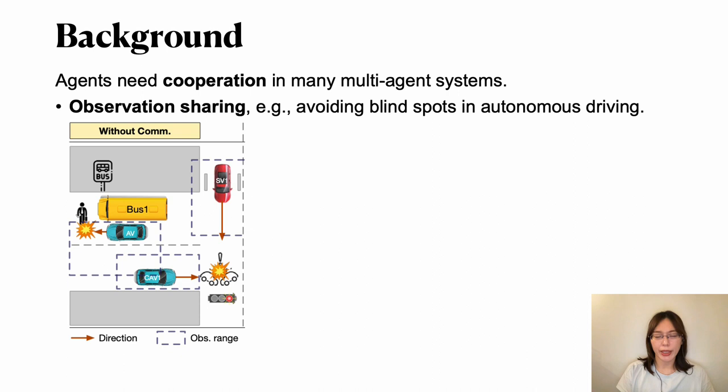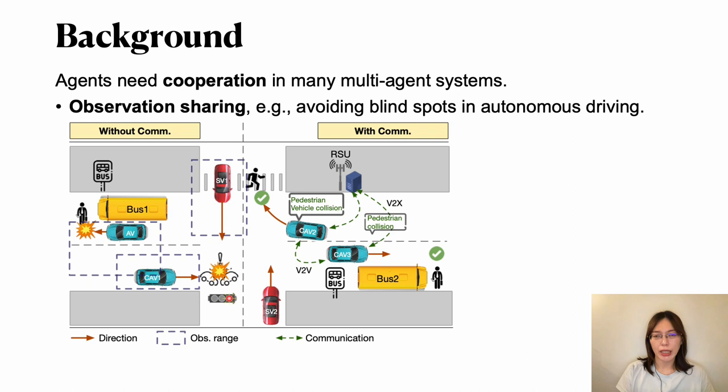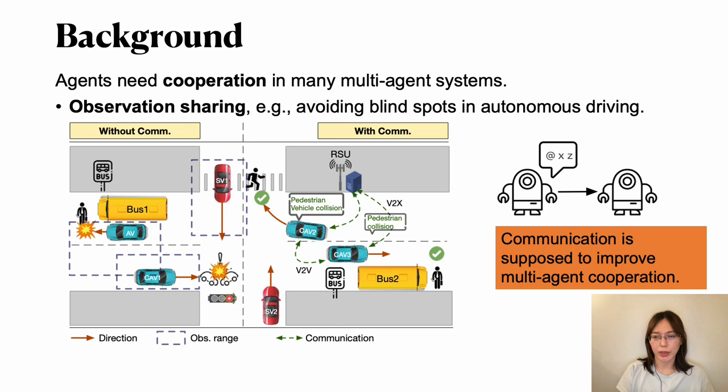Here we use autonomous driving as an example. Vehicles cannot avoid collision due to blind spots caused by limited observation range. However, if communication exists, agents can share observation and avoid collision. So communication is supposed to improve multi-agent cooperation.